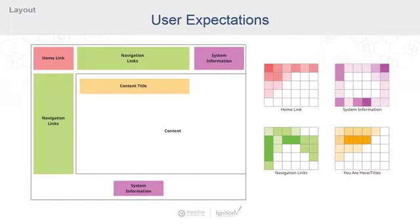Next, in purple — or it looks like pink on screen — is what we're calling utilities. This means maybe the system time, log in and log out links, or other system-level information. This is looked for in the top right and at the very bottom of your application.